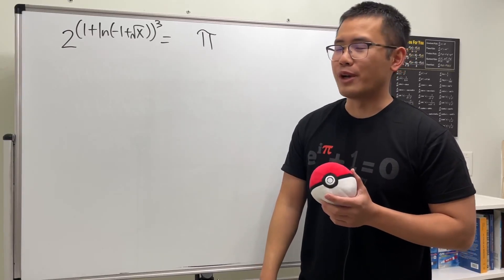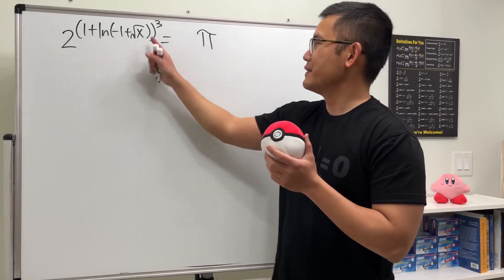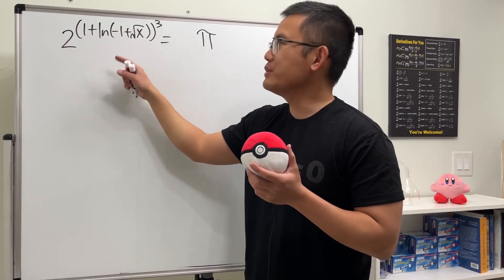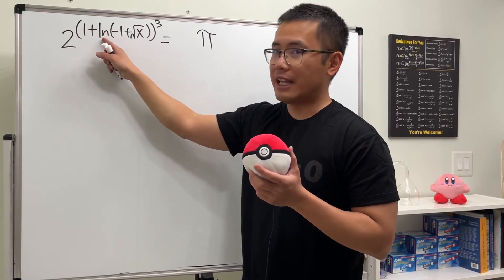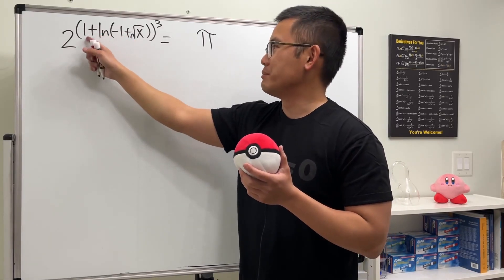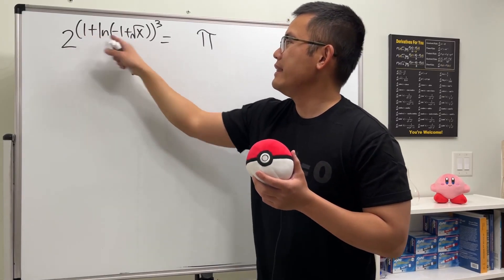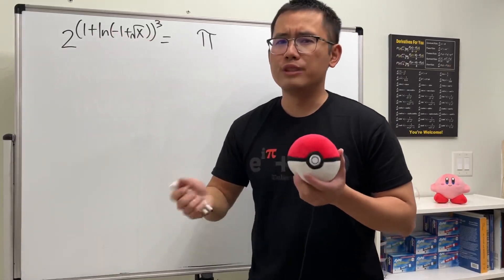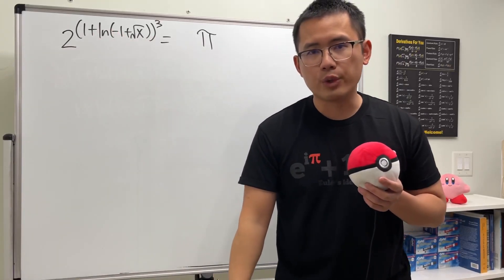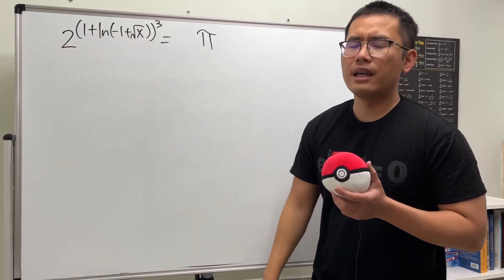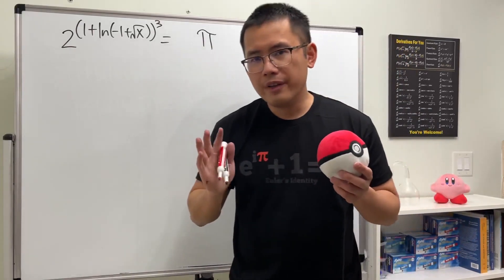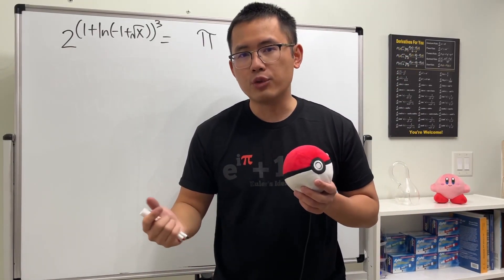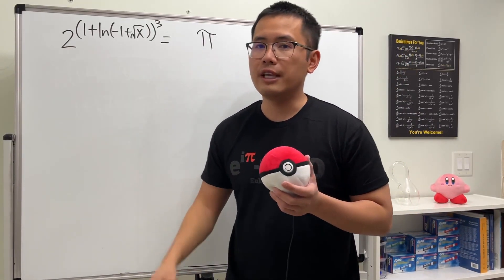This is an all-in-one algebra equation. We have x, a square root, negative one, the natural log, positive one, a third power, two to a power as an exponential equation, and of course pi. The harder part is knowing what inverse operation to apply at each stage.